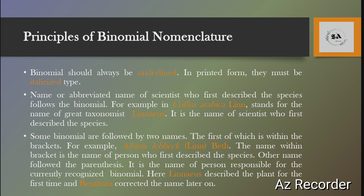The next principle is that some binomials are followed by two names. The first name is within brackets. For example, Albizia lebbeck (Linn.) Benth. Here, 'Albizia' is the generic name, 'lebbeck' is the specific name, and both 'Linn.' and 'Benth.' are abbreviations standing for scientists. The first name, 'Linn.' within the bracket, is the name of the person who first described the species — Linnaeus. The second name, 'Benth.,' is the name of the person who later corrected the name — Bentham.